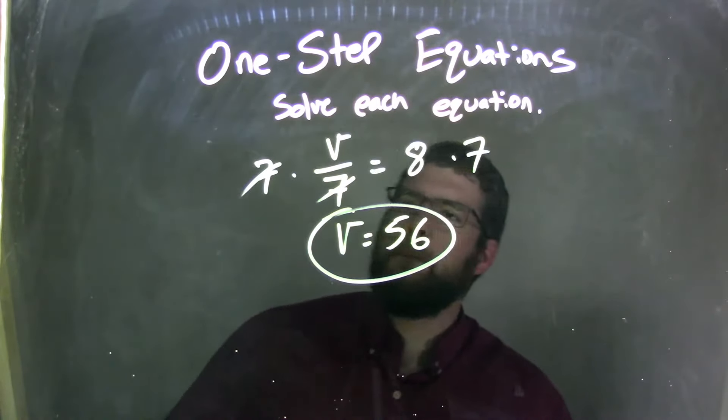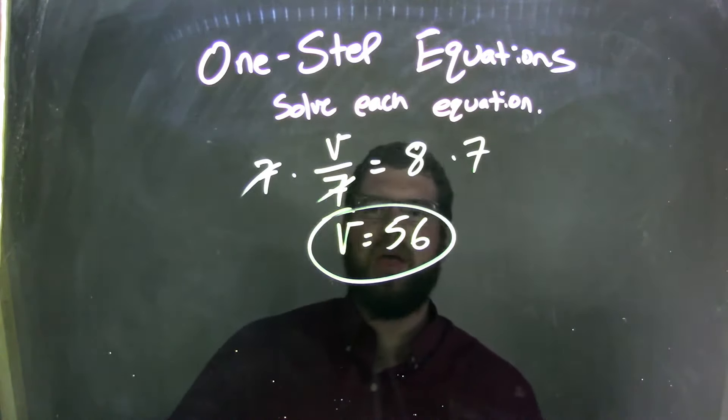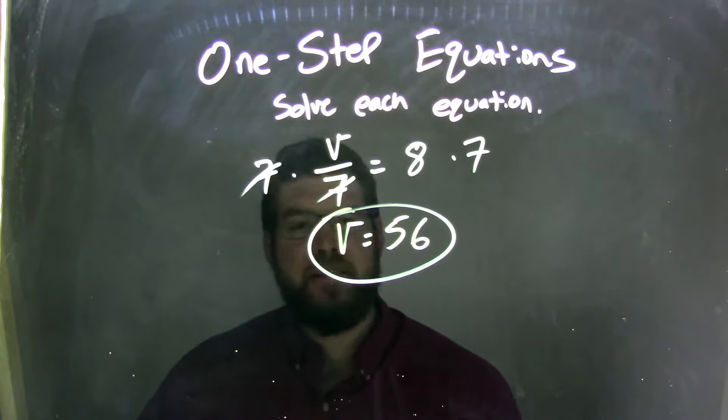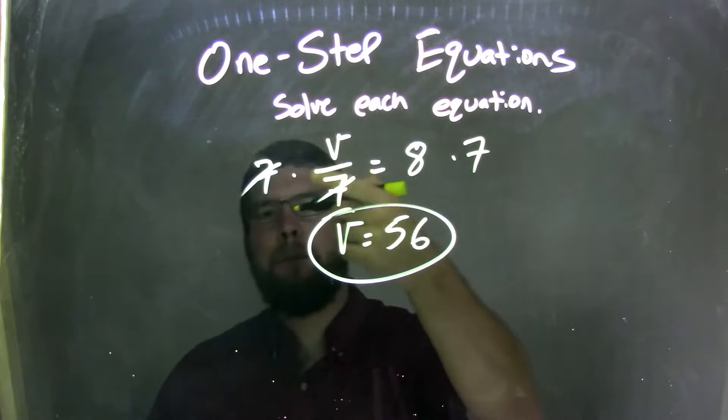So let's recap. We start with V over 7 equals 8. I know that V over 7 was division, V divided by 7. Opposite of division is multiplication.